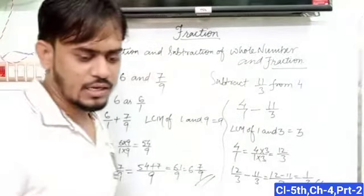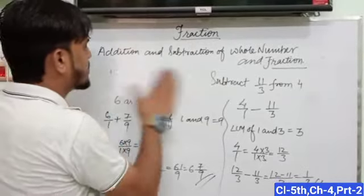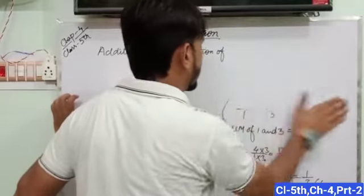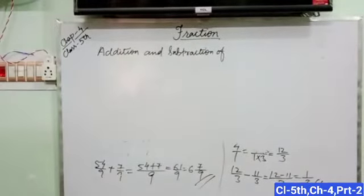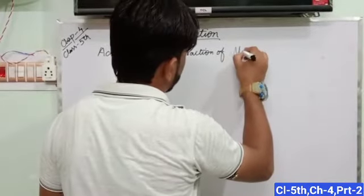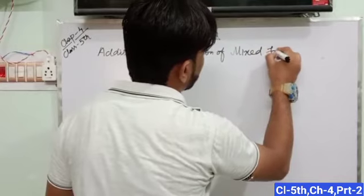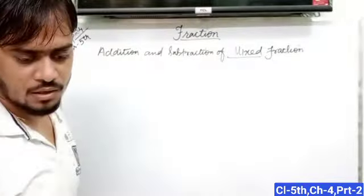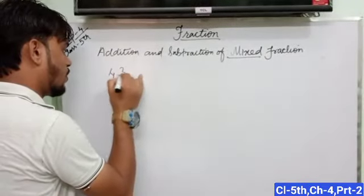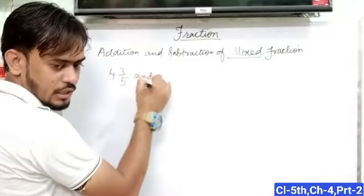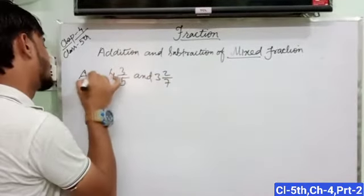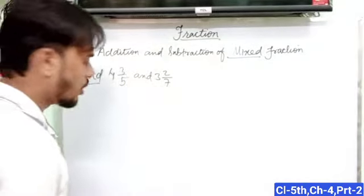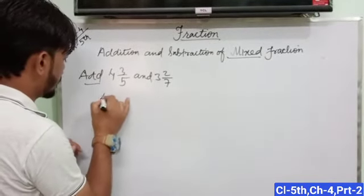Next we will learn addition and subtraction of mixed fraction. We have a question: 4 and 3 upon 5 plus 3 and 2 upon 7. So first of all, change into normal fraction.